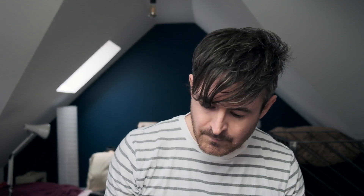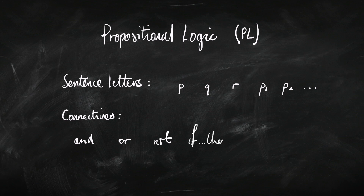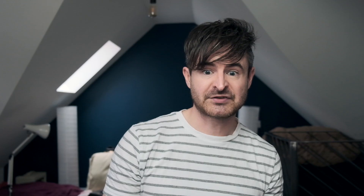We start putting sentence letters together to make more complex sentences using connectives: and, or, not, if-then, and if and only if. Philosophers often abbreviate 'if and only if' as 'iff' — so if you ever see IFF written down, it means 'if and only if'. Those are the five connectives we're going to look at.